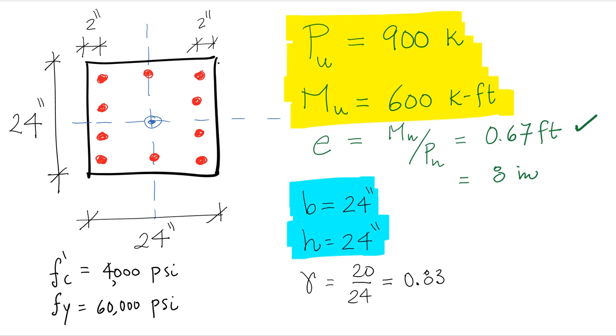The other dimension that we need is the distance from the rebar to the edge of the column. In this case we are selecting 2 inches and that results in a value of gamma of 0.83. Gamma being the distance between the rebar divided by the total size of the column. So it would be that distance in this case is 20 inches divided by the total size of the column which is 24 inches.